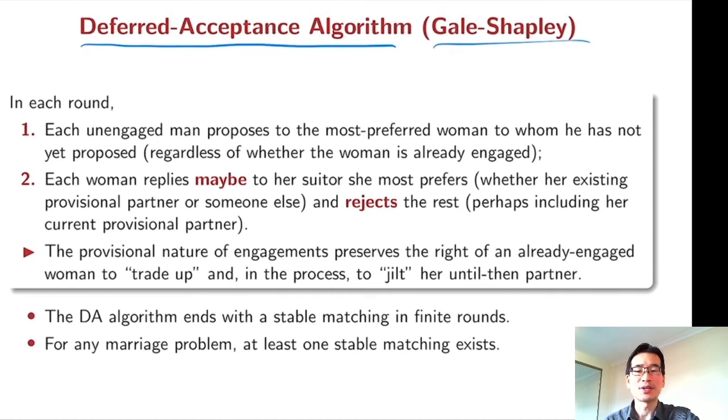In each period, each unengaged man proposes to the most preferred woman to whom he has not yet proposed. Then each woman replies maybe to her most preferred proposer and rejects the others. I will explain this algorithm with an example. This deferred acceptance algorithm ends with a stable matching in a finite round. It also implies that for any marriage problem, there is at least one stable matching.